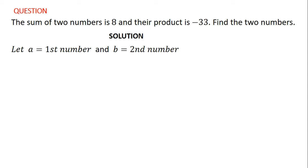The first part of the question says that the sum of the two numbers is eight. That means if you add those two numbers you are going to get eight, so a plus b is equal to eight. That is the first part — I'll call that equation one.